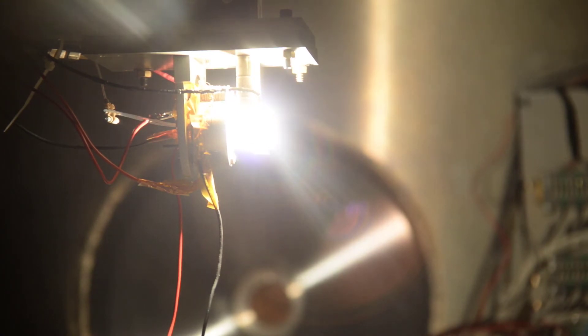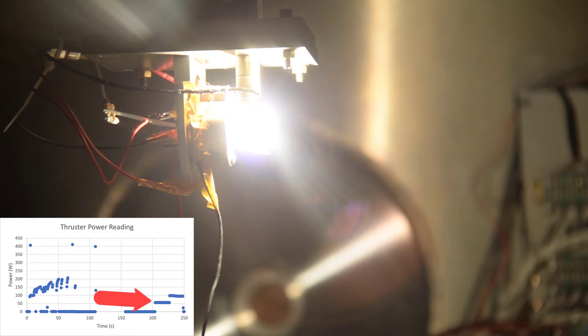All right, so right about now, you'll see a very subtle purple hue coming out of the thruster, which signifies that there's a glow discharge happening.